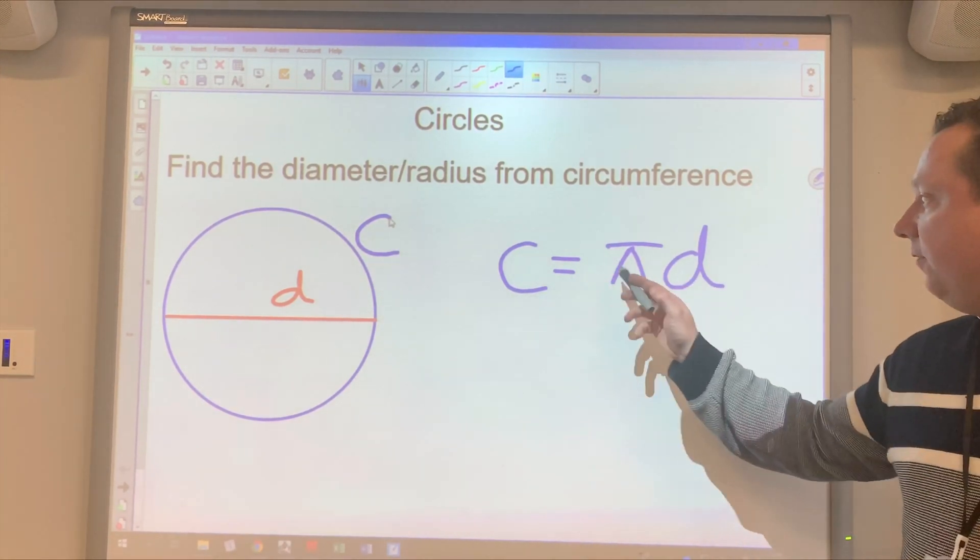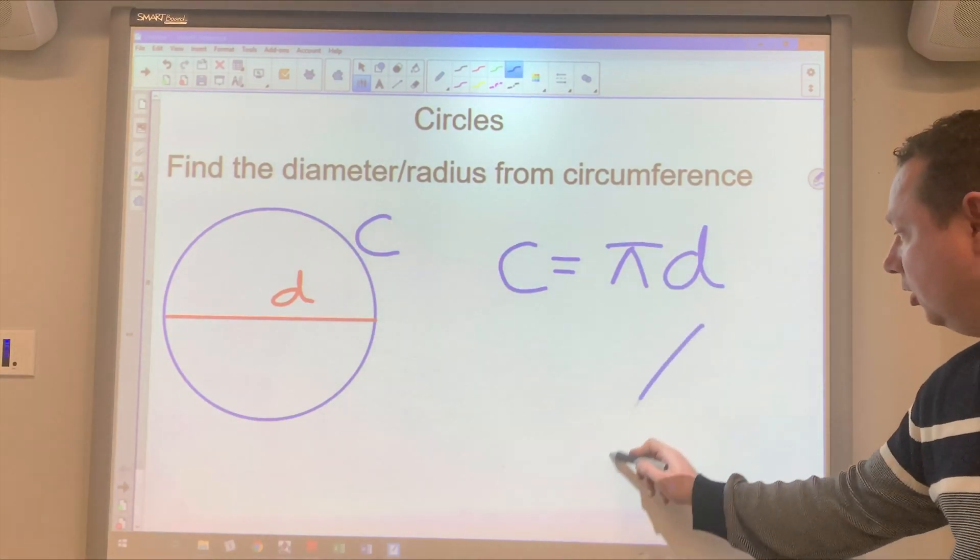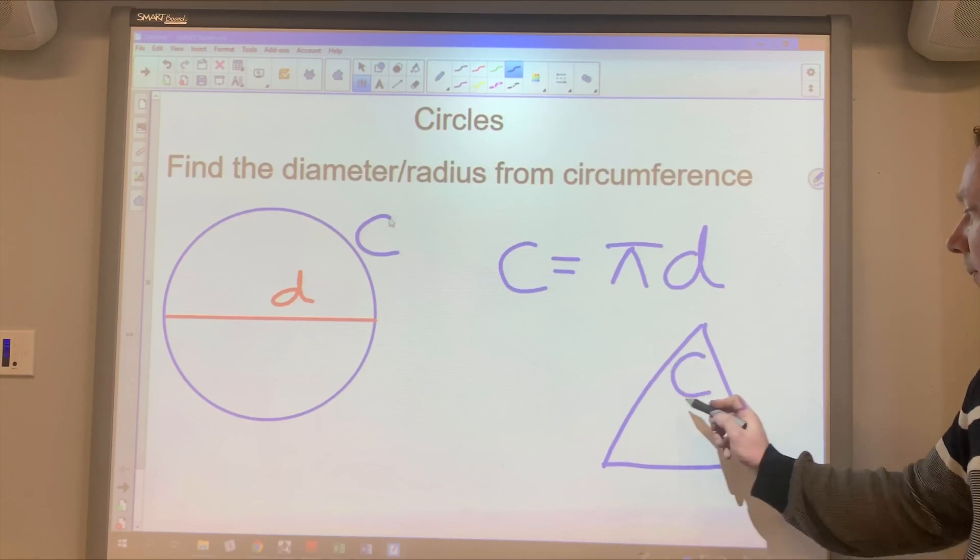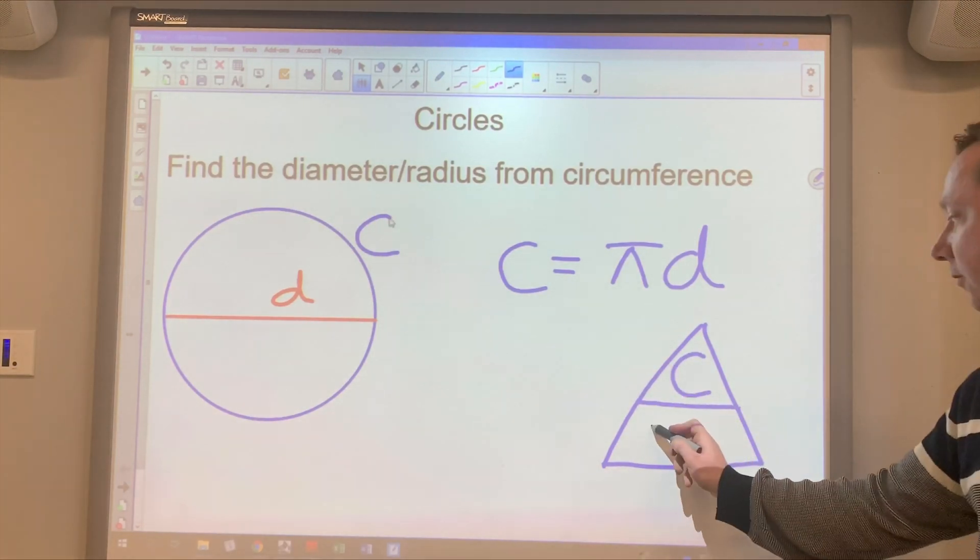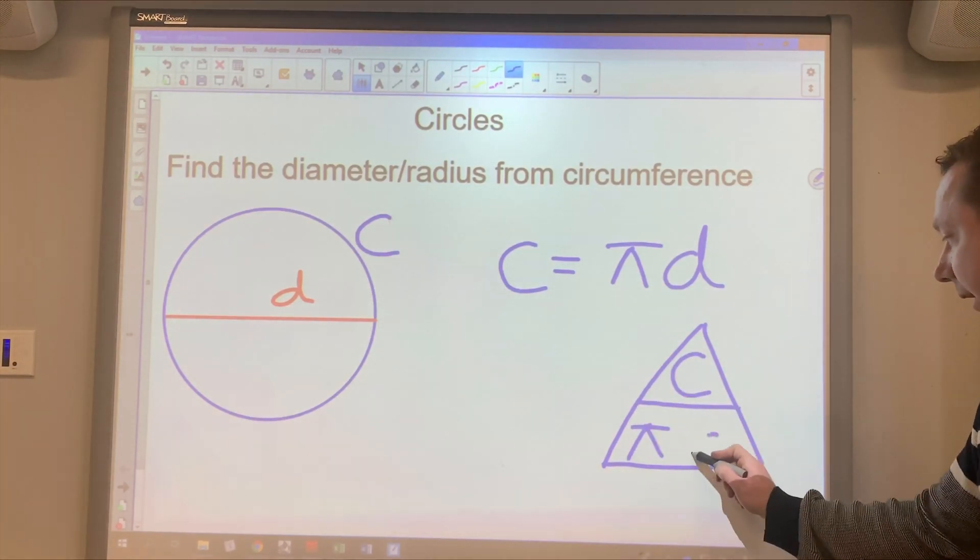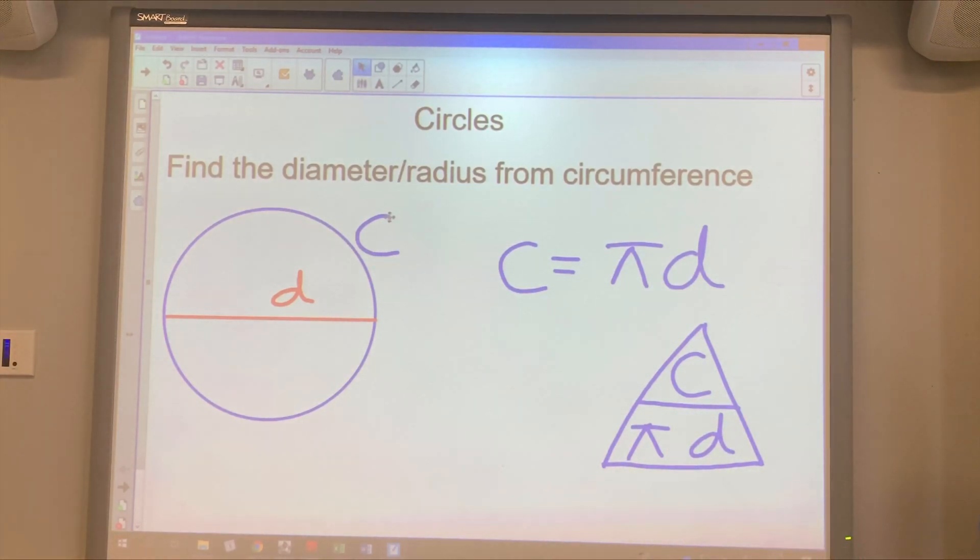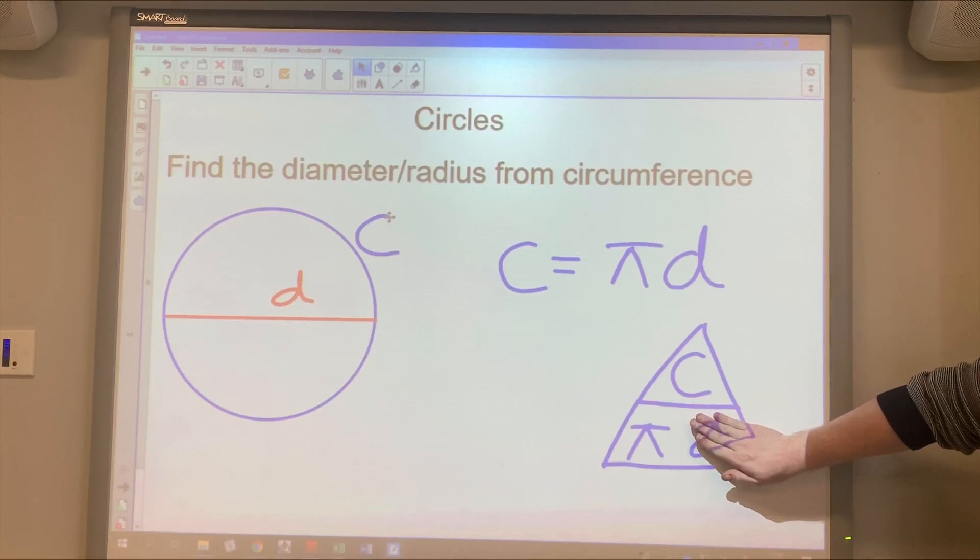Whenever you've got three things connected together by times in, you can draw a triangle. C goes at the top. I draw a line. Then you've got pi and D. So I want to work out how to find D, given the circumference. So I cover D up and I read what it says. C over pi.